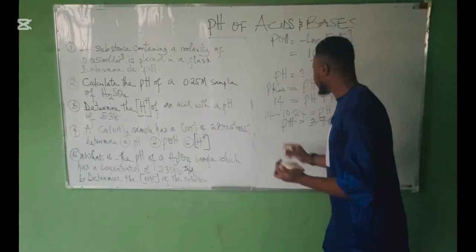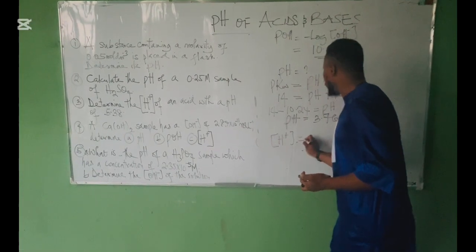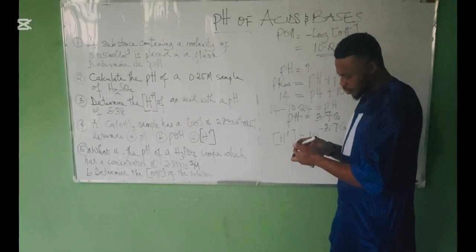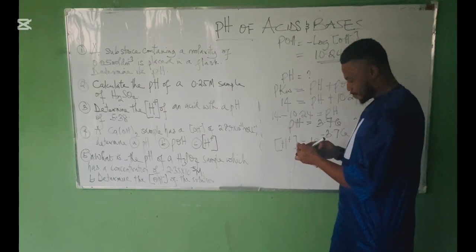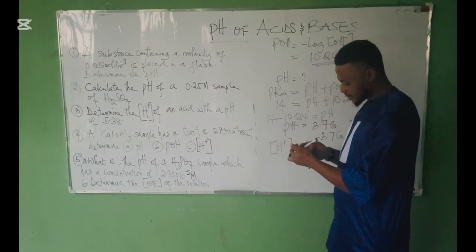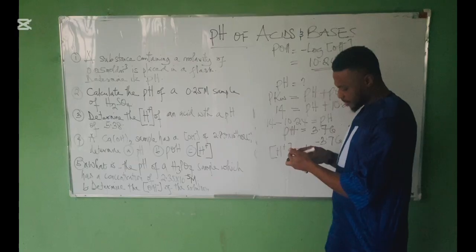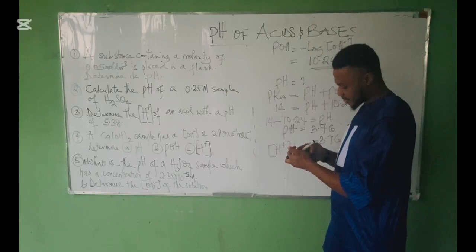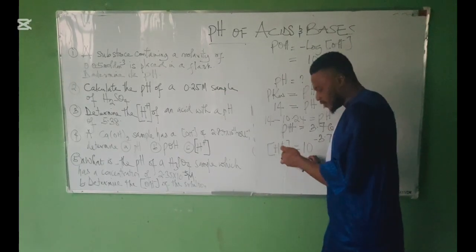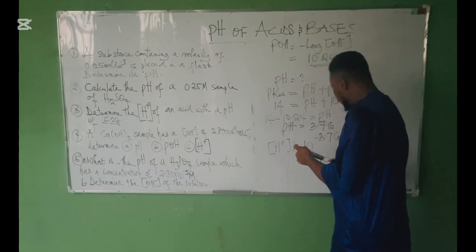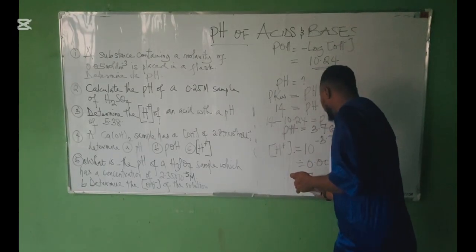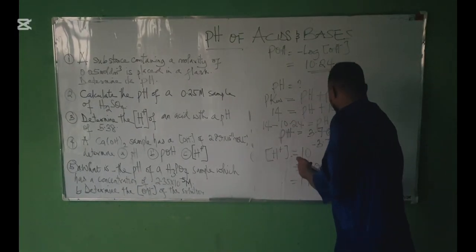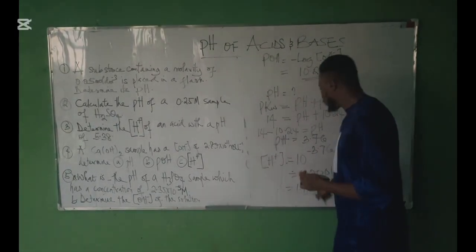Now that we have pH = 3.76, we can find [H⁺]. Remember: [H⁺] = 10^(−pH) = 10^(−3.76) = 0.00017 = 1.7 × 10⁻⁴ mol/L. That is the answer to this question.